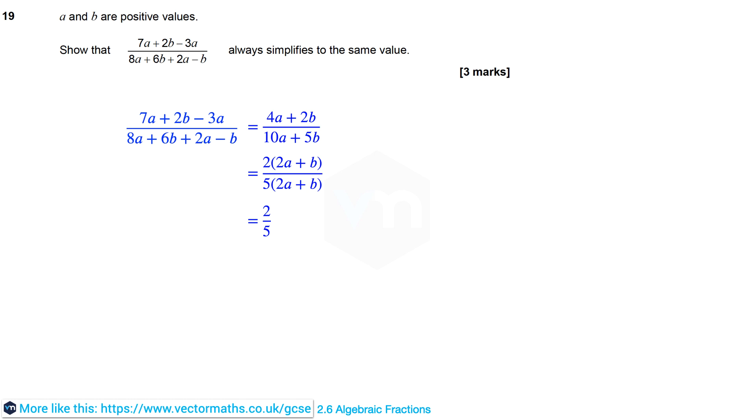Now because a and b are positive values we can be sure that 2a plus b does not equal 0. Therefore we are allowed to divide by it. And if we cancel the terms this reduces to 2 fifths. So it always has the same value, 2 fifths.